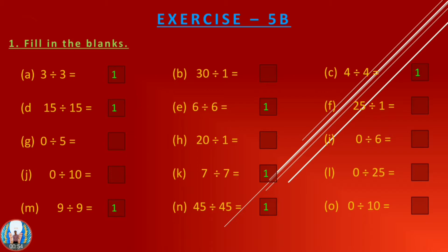The second property: when we divide any number by 1, we get the same number as the answer. For example: 30 divided by 1 equals 30; 25 divided by 1 equals 25; 20 divided by 1 equals 20. The third property: when we divide 0 by any number, we always get 0 as the answer. For example: 0 divided by 5 equals 0; 0 divided by 6 equals 0; 0 divided by 10 equals 0; 0 divided by 25 equals 0.